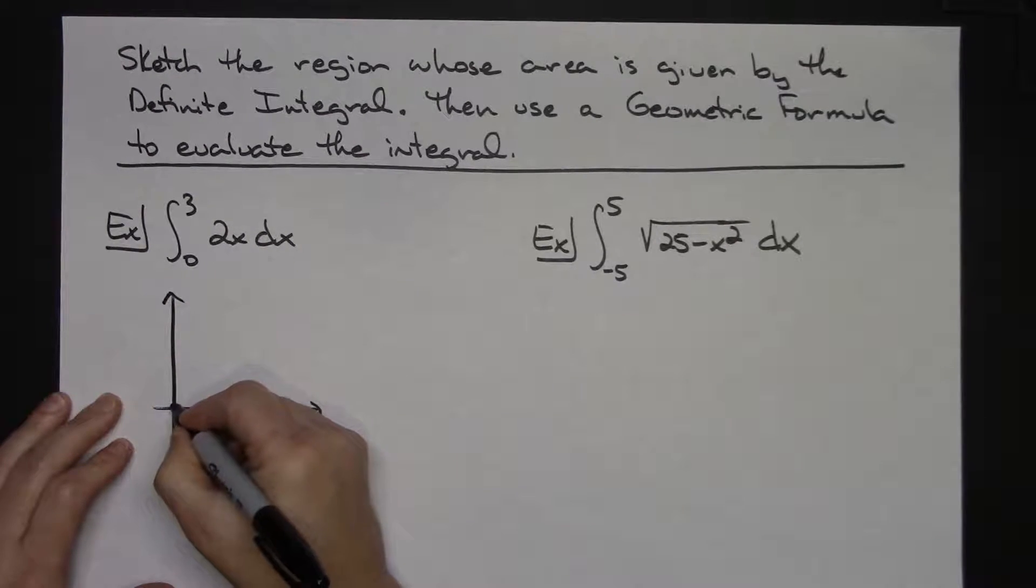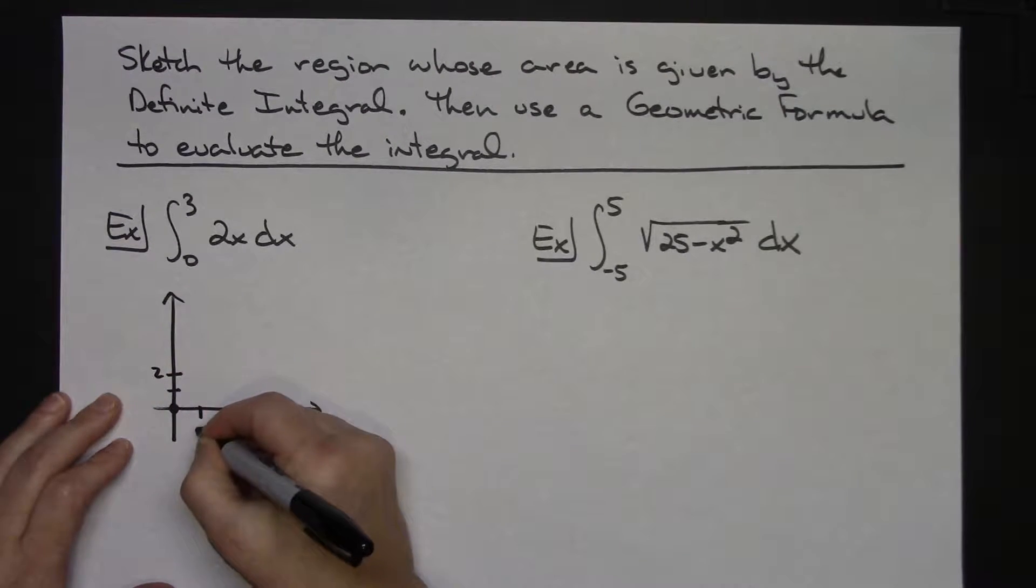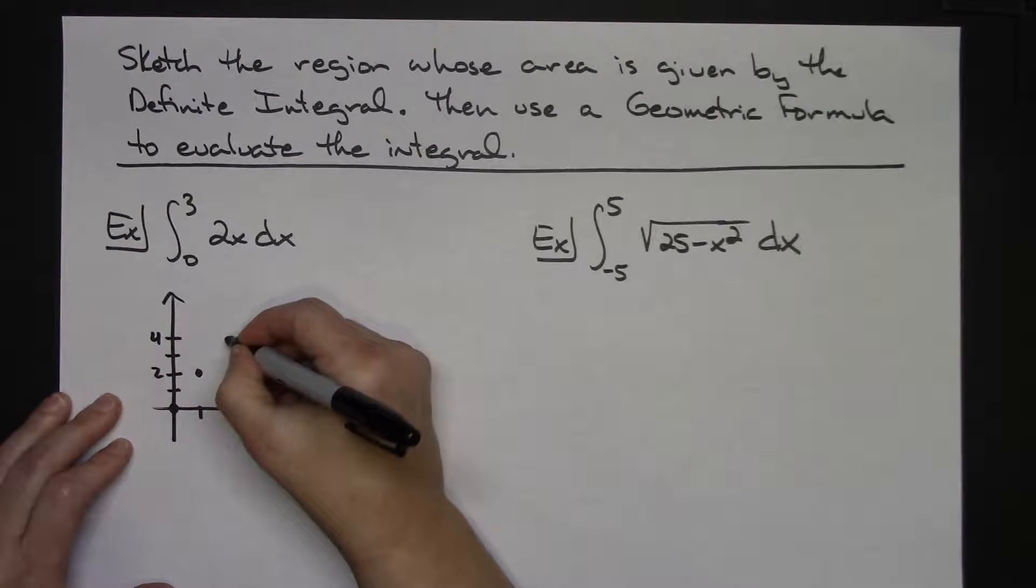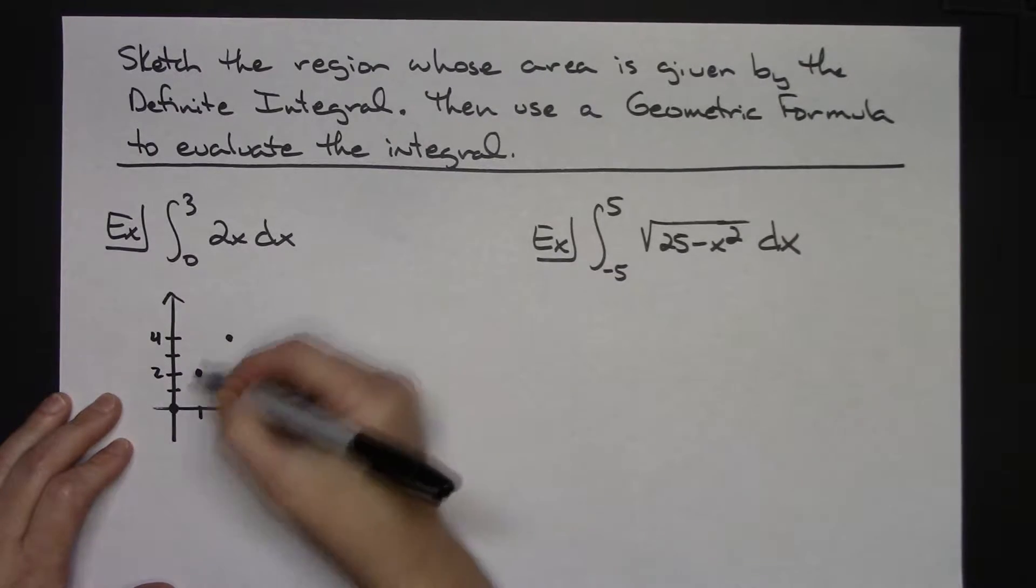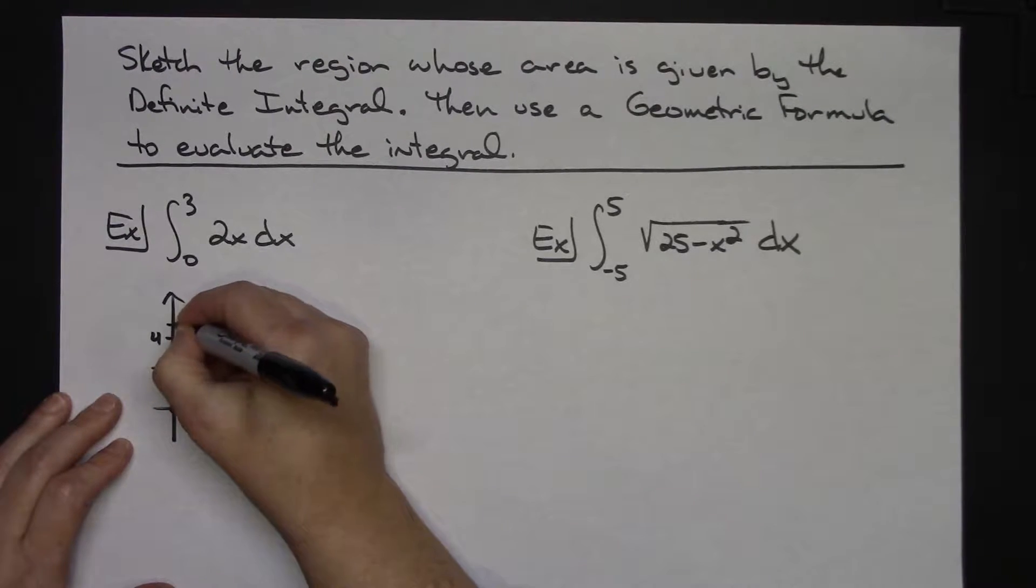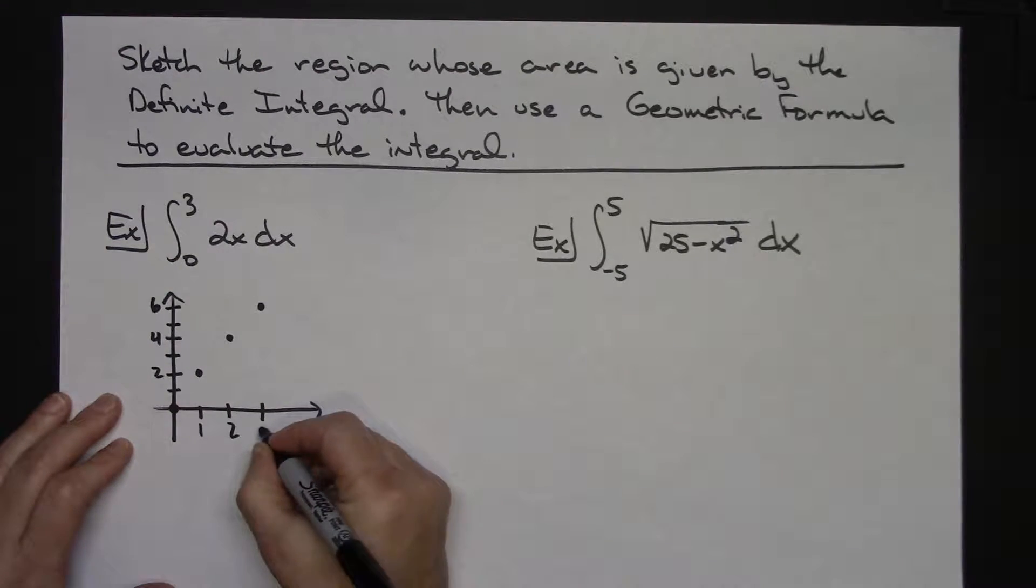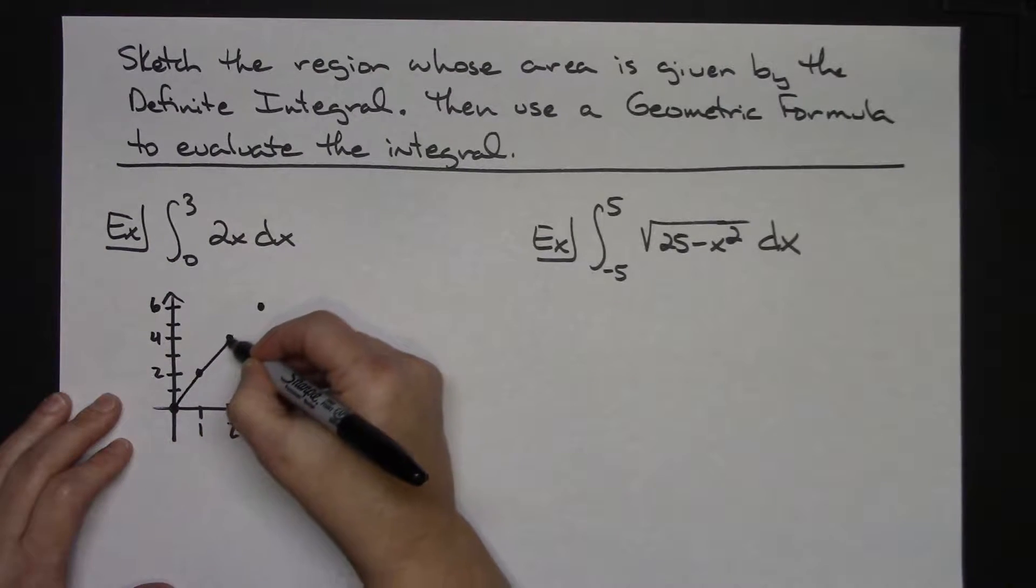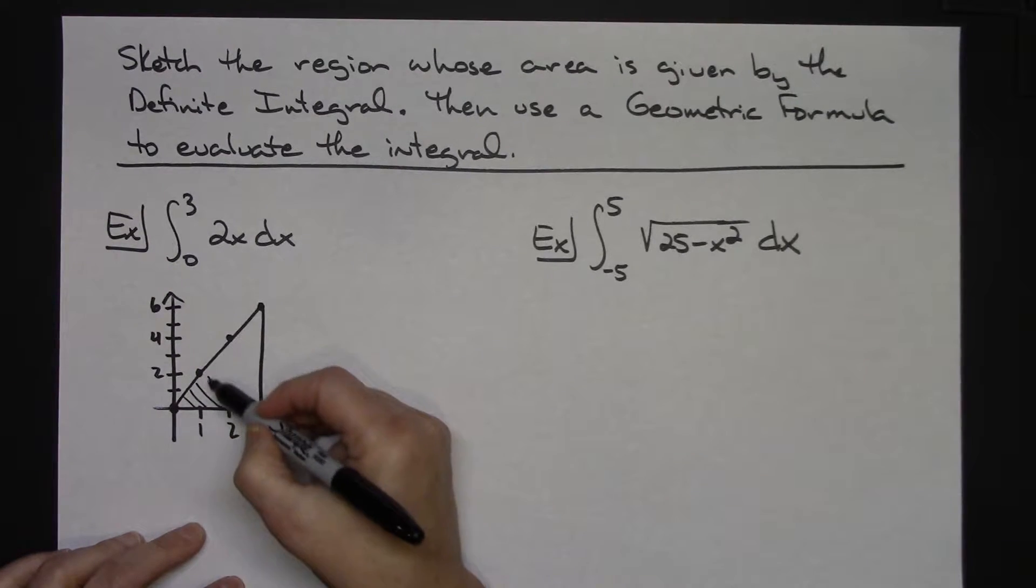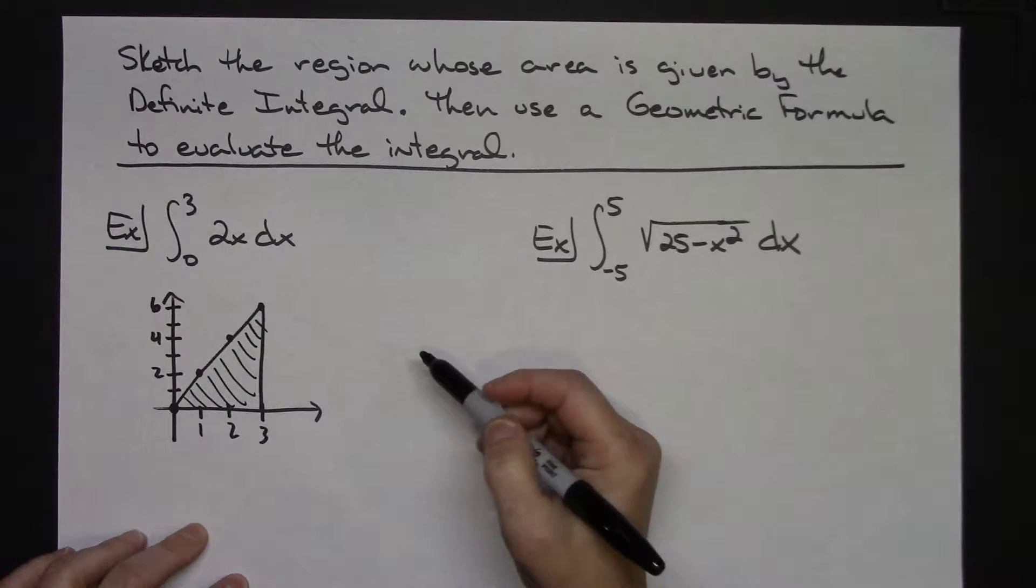So you're going to want to probably sketch it somewhat accurately here. Let's see, it would go through 0, and I'd have a slope of 2 on this. So up 2, over 1, up 2 more, and then over 1 more, and then how far do you have to go? Well, I've got to run from 0 to 3. So there's 1, there's 2, I've got to go again. That would be 6 over to 3 there. So not too bad of a picture there. And the region would be this region in here. So I've shaded in the region showing where that region would be.